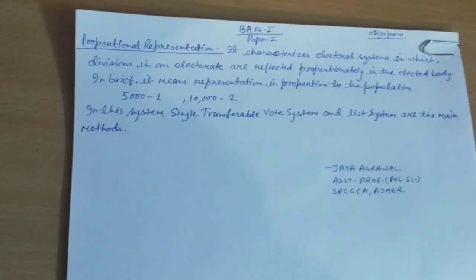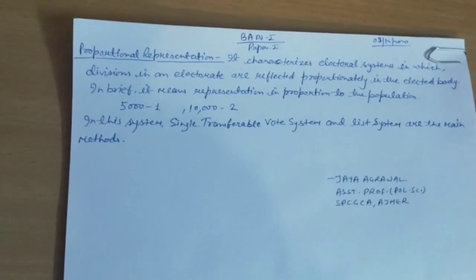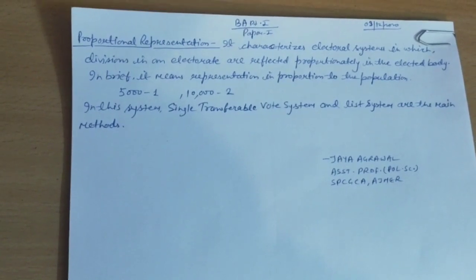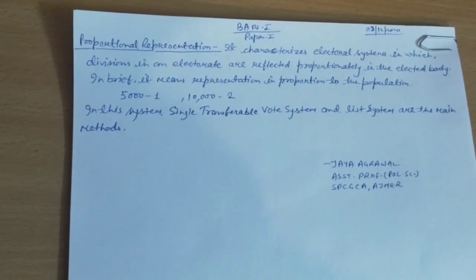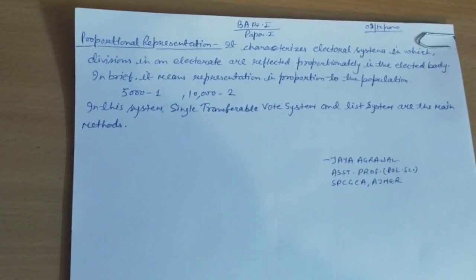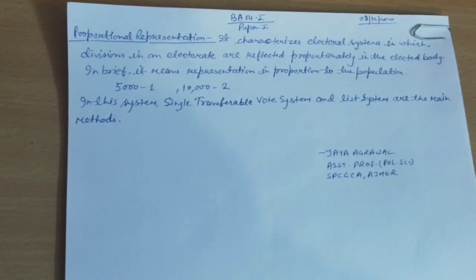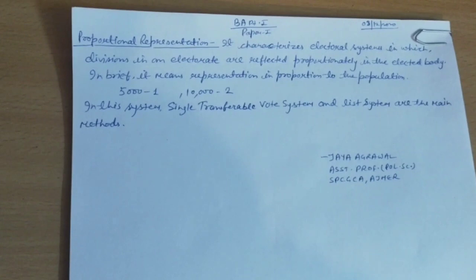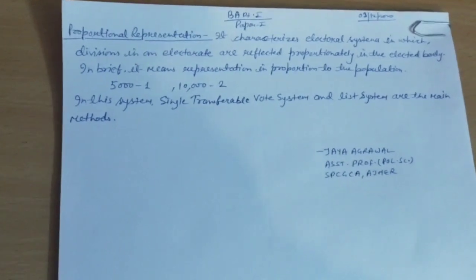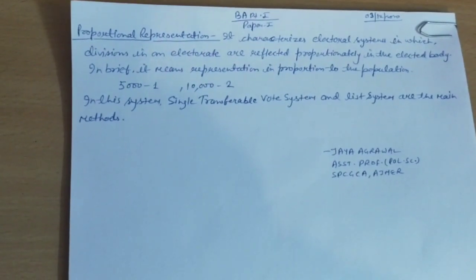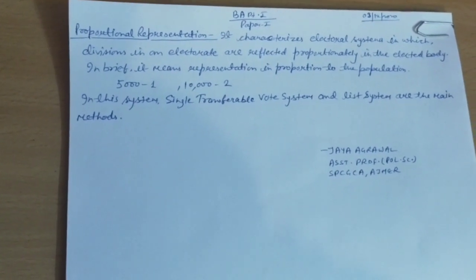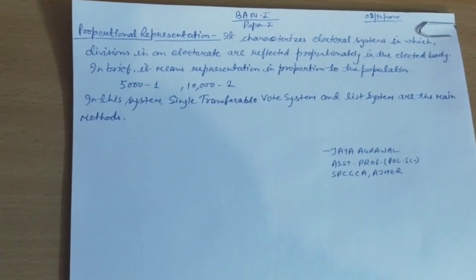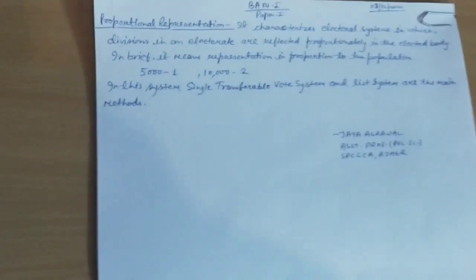Proportional representation means representation in proportion to the population. If we are to elect one representative per 5,000 people, then there will be two representatives for a population of 10,000, three representatives for 15,000, and four representatives for a population of 20,000. This is representation in proportion to the population.